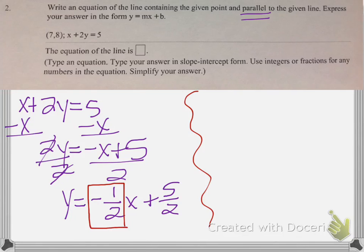Now that I have my slope, and I have a point, I can write a brand new equation that's parallel to this equation, but goes through the point 7, 8. So this is where you can use that point slope form, y minus y1 equals m times x minus x1.